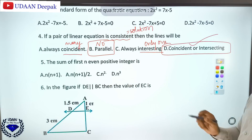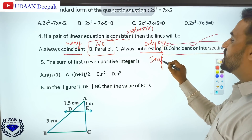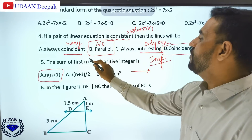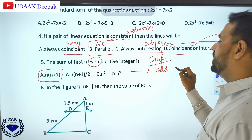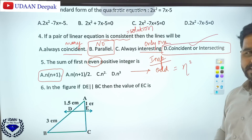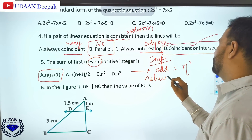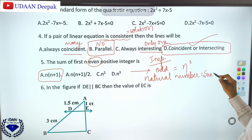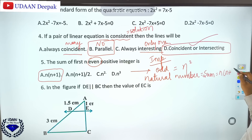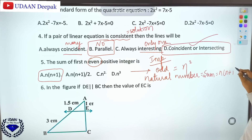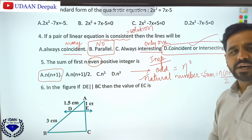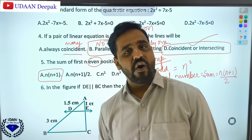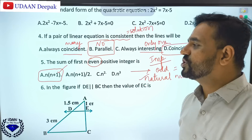The sum of the first n positive integers is n(n+1)/2. If they ask for the sum of n odd positive integers, the answer is n². If they ask for n natural numbers, the sum is n(n+1)/2. Remember: sum of odd is n², sum of even is n(n+1). This is question number 5.